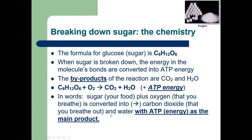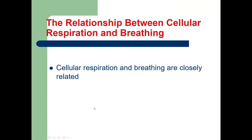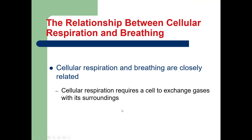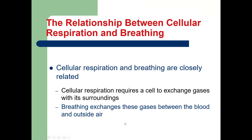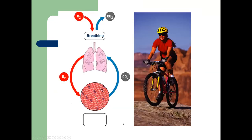Cellular respiration and breathing are closely related — you have to be able to do one before the other. Cellular respiration came first: as embryos we weren't breathing but we still respired. Cellular respiration requires a cell to exchange gases with its surroundings — even bacteria and protists do this. Breathing exchanges gases between the blood and outside air: oxygen comes in when we breathe in, CO2 leaves when we breathe out.